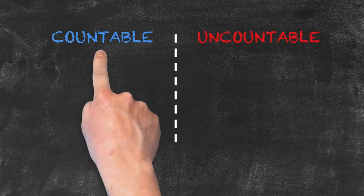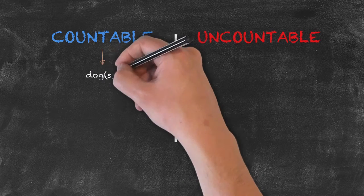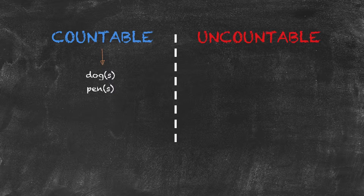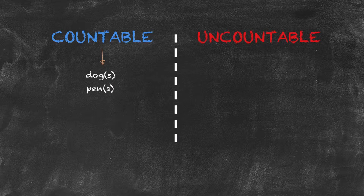We have our countable nouns. Dogs, pens are two examples. The very nature of the words means that we can count these nouns. One dog or five pens.